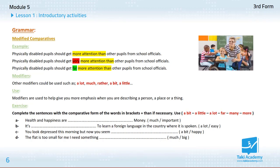I will ask you to look at this first example accompanied by a picture. So, I read the first example: Physically disabled pupils should get more attention than other pupils from school officials. Look at the colored text here in yellow. What do you call this form?